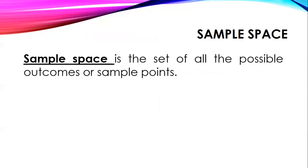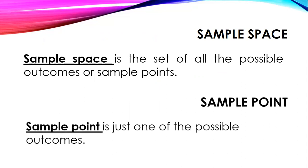Let's proceed with sample space. It is under outcome. Sample space is the set of all the possible outcomes or sample points. Next is sample point. Sample point is just one of the possible outcomes. So the difference between sample space and sample point is that sample space is the set of all the possible outcomes, while sample point is just one, exactly one of the possible outcomes.